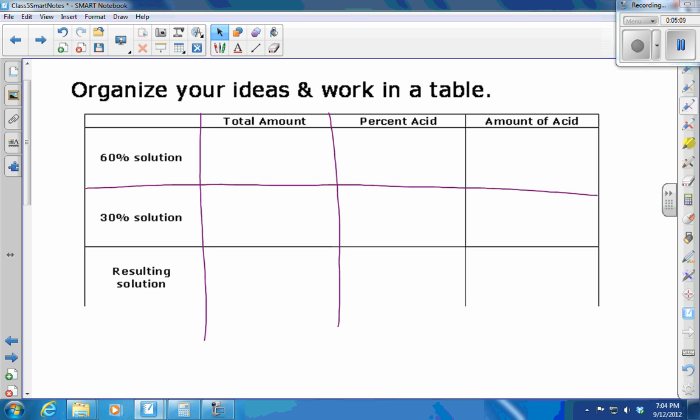So the 60% solution, the total amount we have is 300 milliliters. And what percent acid is it? 60, so I'll just put 0.6. My 30% solution, the amount is what I defined as x. I don't know how much. That's what they asked me. And it's 30%. My resulting solution, the total amount is going to be 300 plus x. 300 milliliters of this plus x of this gives me 300 plus x total. It's going to be 50% acid. That's what the question asked for.